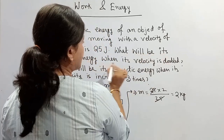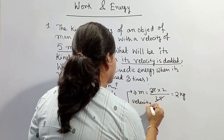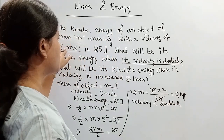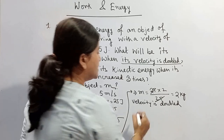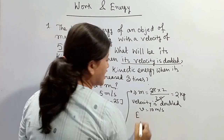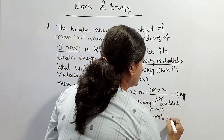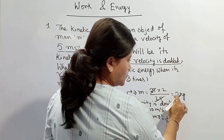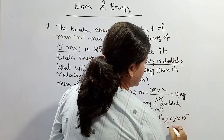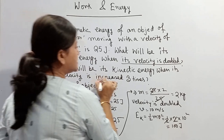Now what will be its kinetic energy when its velocity is doubled? First time velocity is 5, so now velocity is double, that means V equals 10 meters per second. So Ek equals half M V squared, that is half into M equals 2, and V squared is 10 squared. The 2s cancel, so 10 squared means 100 J.